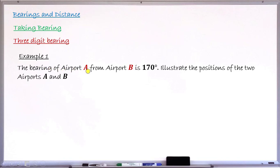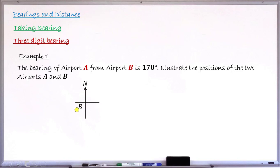Example number one: the bearing of airport A from airport B is 170 degrees. The question asks us to illustrate the positions of the two airports A and B. For the solution, we first mark airport B, since we want to find the direction of airport A from B. We draw the four major cardinal directions — north, east, south, and west — at the position of airport B.